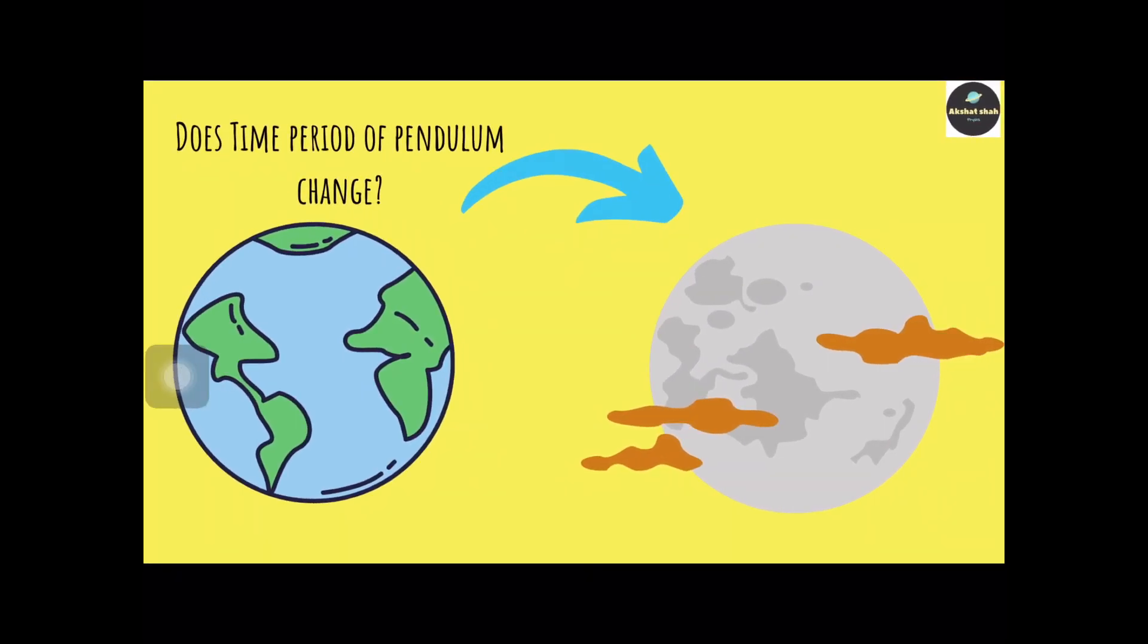Now the question is: what happens to the time period of a simple pendulum on the Moon? Some of us might say it doesn't change whether on Earth or on the Moon, although it does matter where the simple pendulum is located.